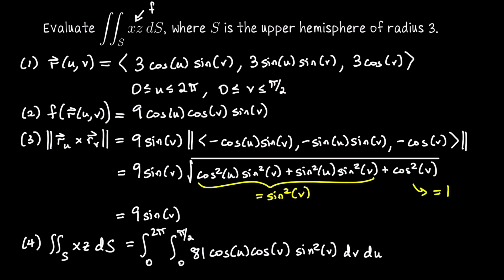We can work this out, but the cosine(u) term, when anti-differentiated with respect to u, gives sine(u) evaluated from 0 to 2π — both values are 0. In other words, integrating cosine(u) over one full revolution gives equal positive and negative areas, so the overall answer is 0. That wraps up the integral using spherical coordinates.